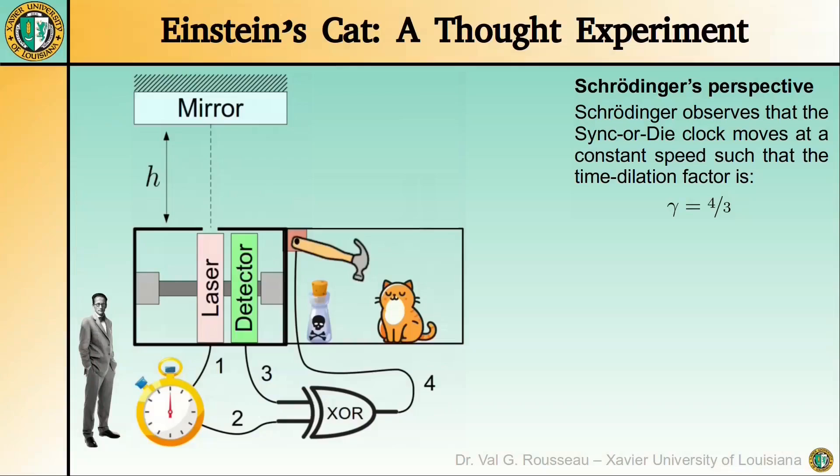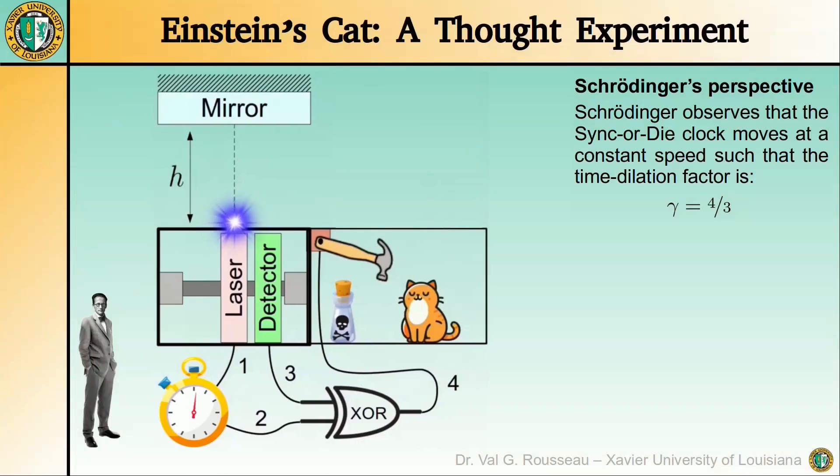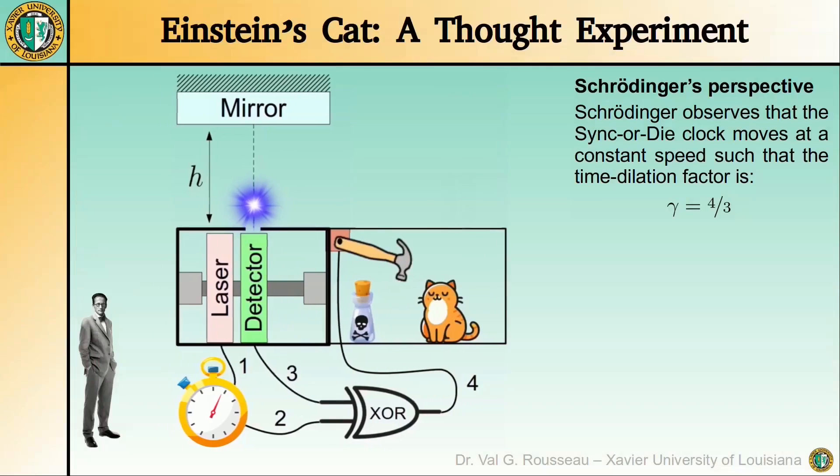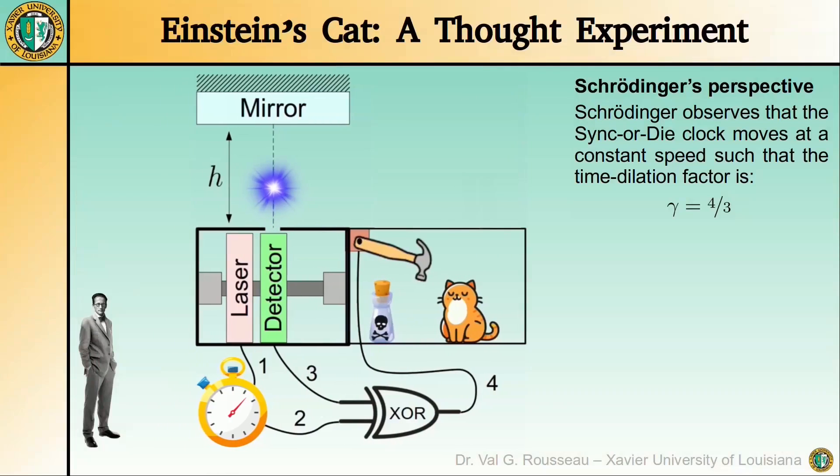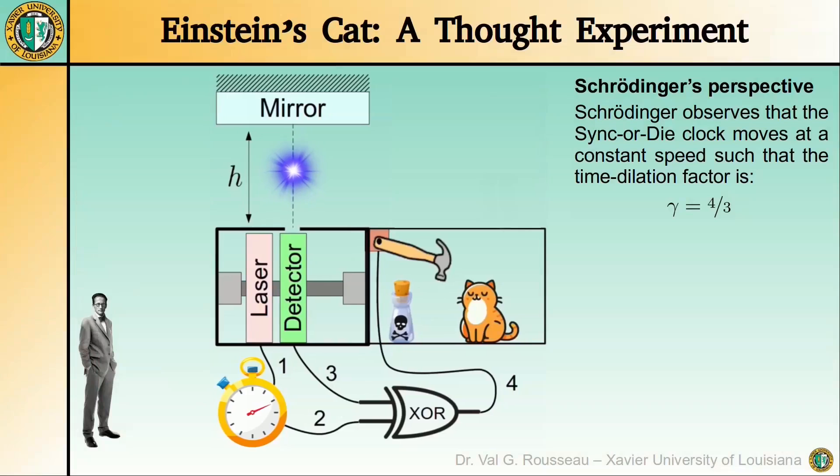But now imagine Schrodinger watching the same device move past him at constant speed. In his frame, the light follows a longer diagonal path. It takes 40 seconds to complete the round trip.